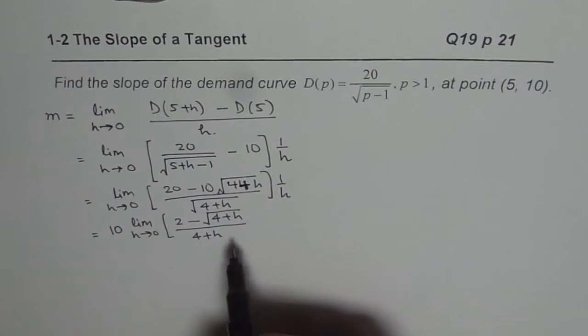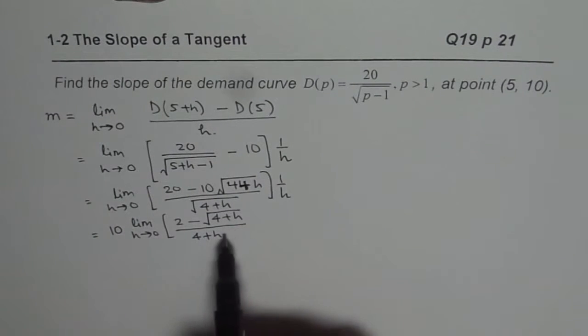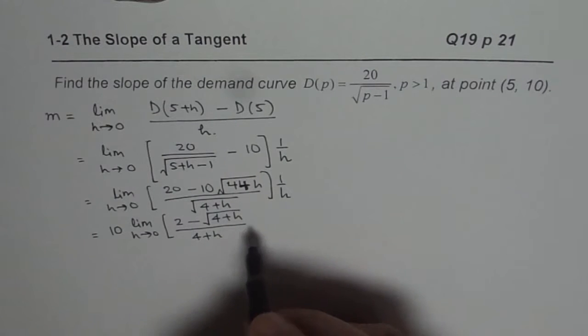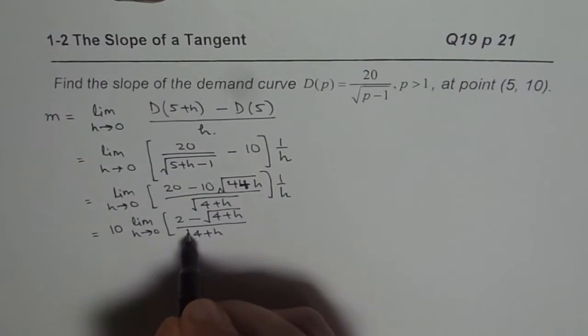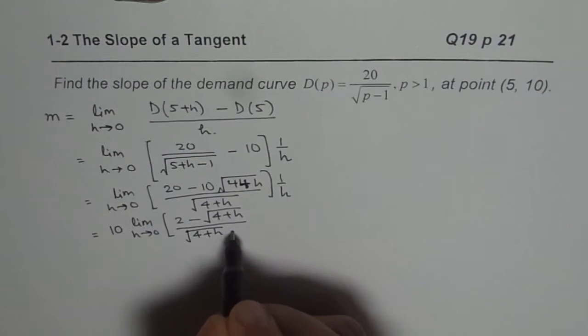And at this stage, we need to rationalize the numerator, so that we can simplify it further. So we can write this H, this is square root, and then times H. Let me bring it inside.